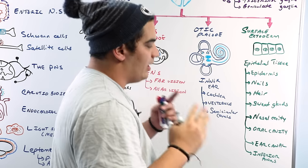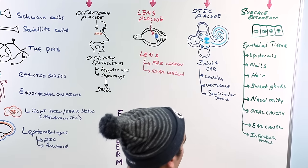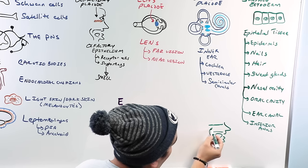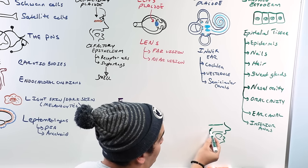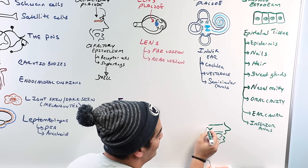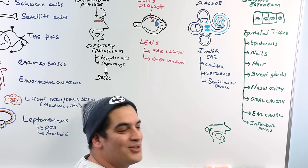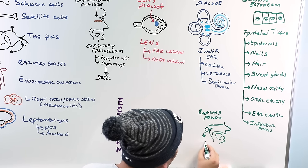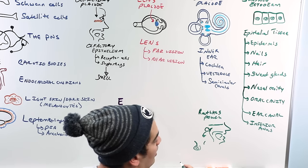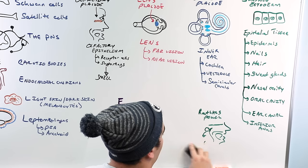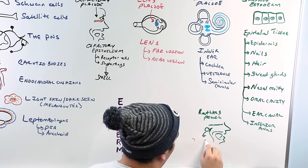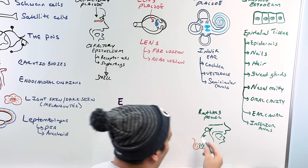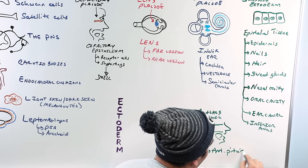One more important thing exams love to ask: the epithelial tissue from the surface ectoderm in the nasopharynx forms a little pouch called Rathke's pouch. Rathke's pouch buds off and fuses with the structure coming off the hypothalamus — the posterior pituitary. Rathke's pouch itself becomes the anterior pituitary.